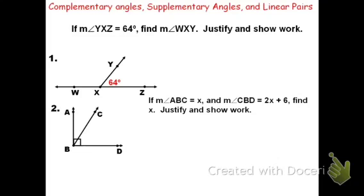If the measure of angle YXZ is 64 degrees, we want to find the measure of angle WXY, which is the other side. To find that angle, we need to figure out what type of angle relationship we're looking at. Together they form a straight angle, which means we're looking at a linear pair. So we can say the measure of angle WXY plus the measure of angle YXZ equals 180. When justifying, don't just say supplementary angles — the better name here is linear pair, since they're also adjacent. Write that as your justification.